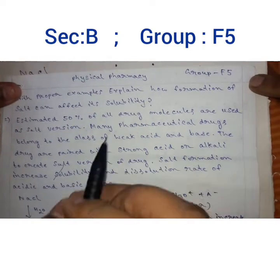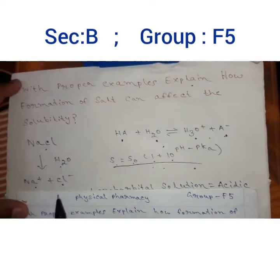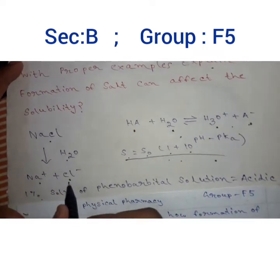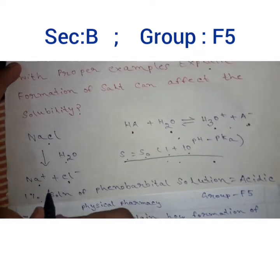Now comes to the explanation. When NaCl is dissolved into water, it gives Na+ and Cl- ions. These are polar groups.